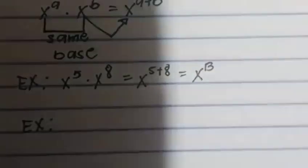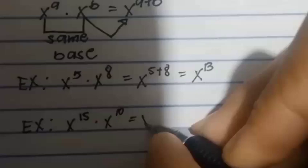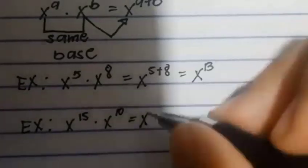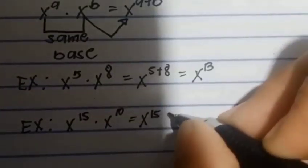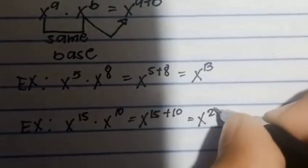Example number 3: x to the 15 times x to the 10 equals, copy the base, so x to the 15 plus 10 equals x to the 25.